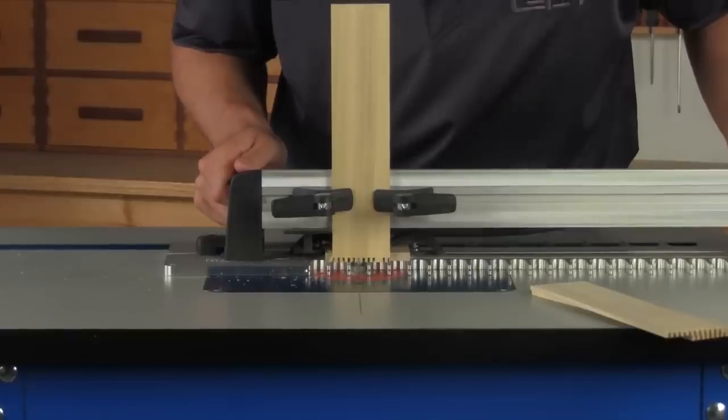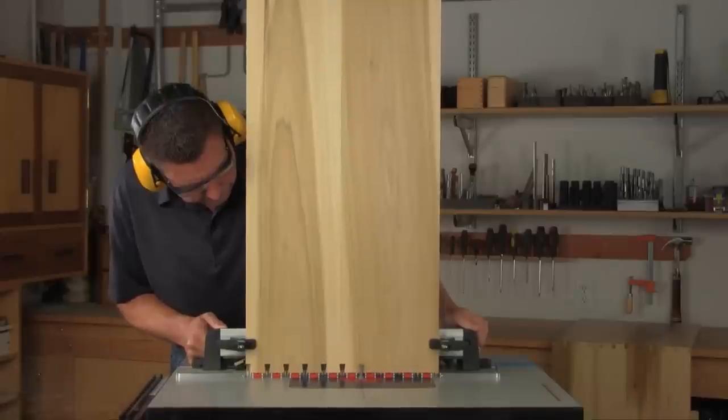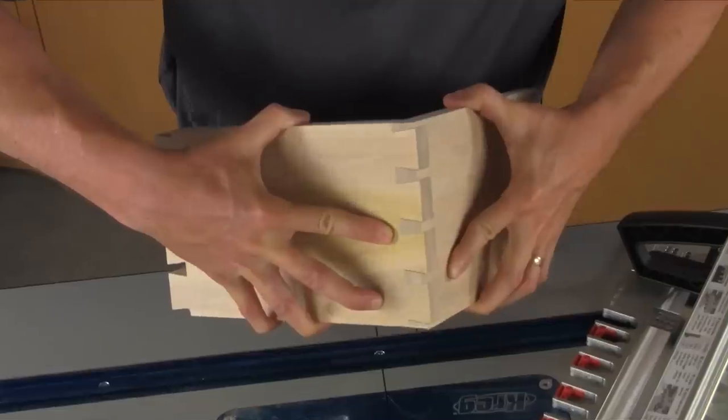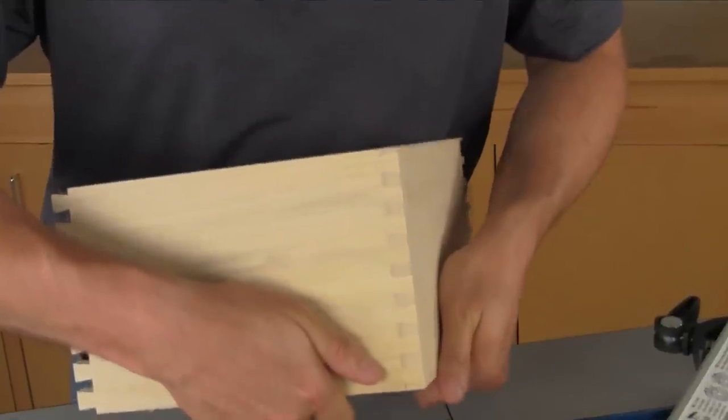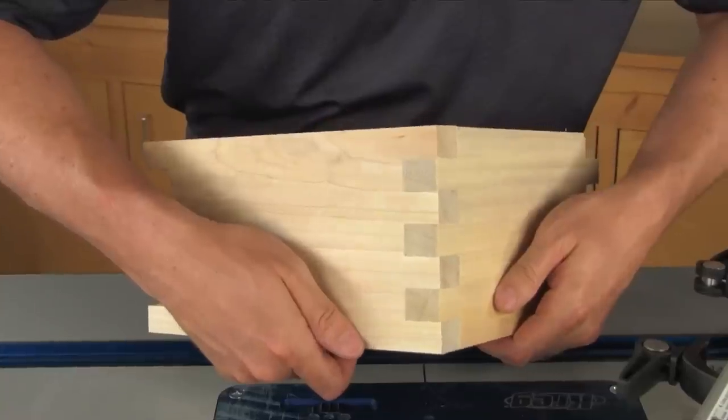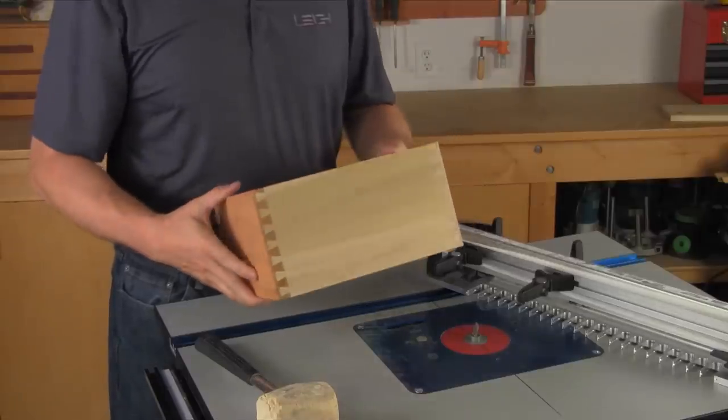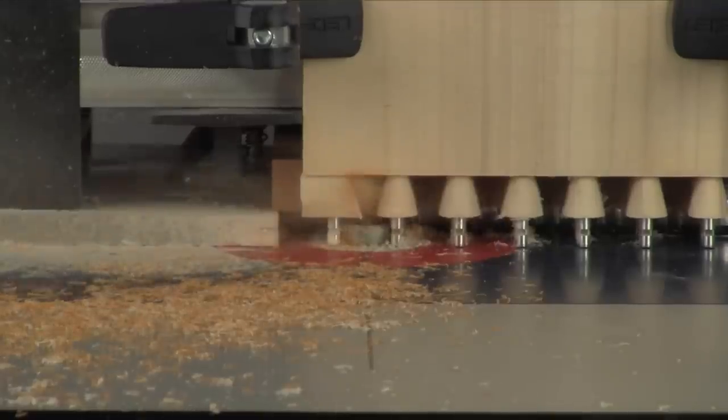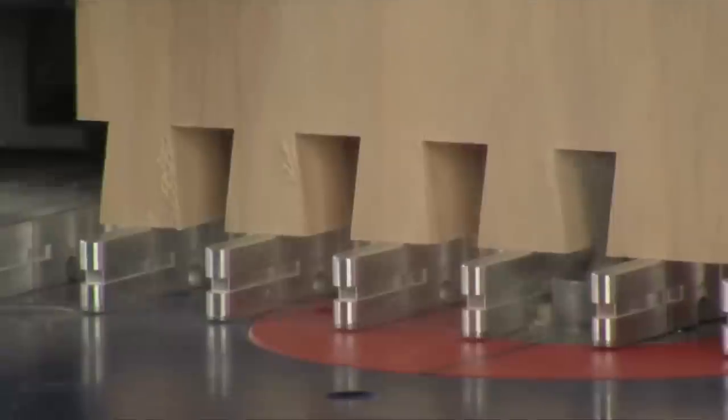The RTJ-400 can produce five sizes of through dovetails, four sizes of half-blind through dovetails, three sizes of single-pass half-blind dovetails, and four sizes of box joints. Made from CNC machined aluminum, it promises durability and exactness.